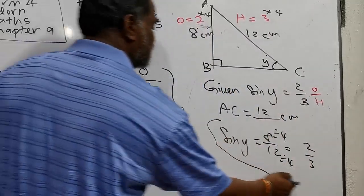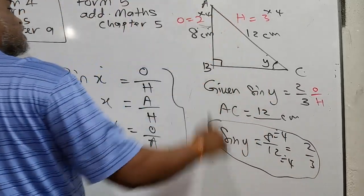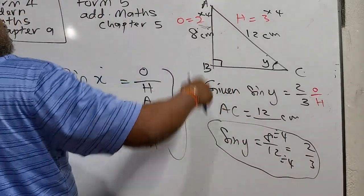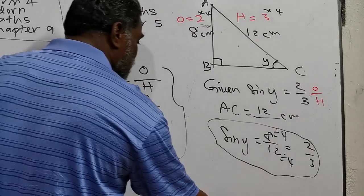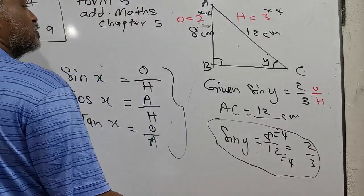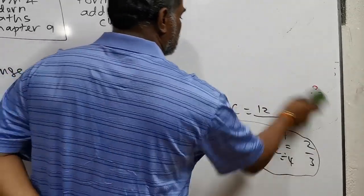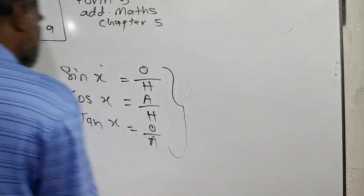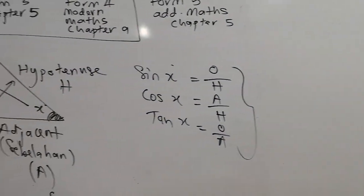So AC is 12 cm. This is one way to do it — there are other methods too, but this is the easiest method for this level. Most important: you must remember the formula. That's all for that question type.